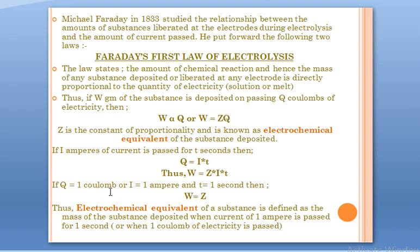If one coulomb of electricity is passed — or one ampere for one second — then q = 1 and i = 1, t = 1, so w = z. The electrochemical equivalent of a substance is defined as the mass of the substance deposited when a current of one ampere is passed for one second, or when one coulomb of electricity is passed. This is Faraday's first law: w = zq, and when each quantity is one, w = z.